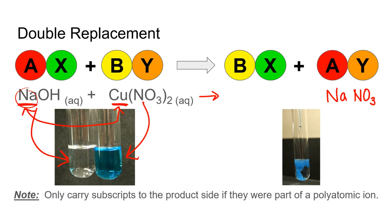Next, we imagine copper coming over and taking sodium's place — we list the metal first again. Copper's new partner will be the hydroxide ion. We need to check the charges and do any dropping and crossing necessary to get the overall ionic formula correct. We should notice that copper can be +1 or +2 — it's one of those multivalent metals — so we have to figure out which copper ion we're dealing with in this equation.